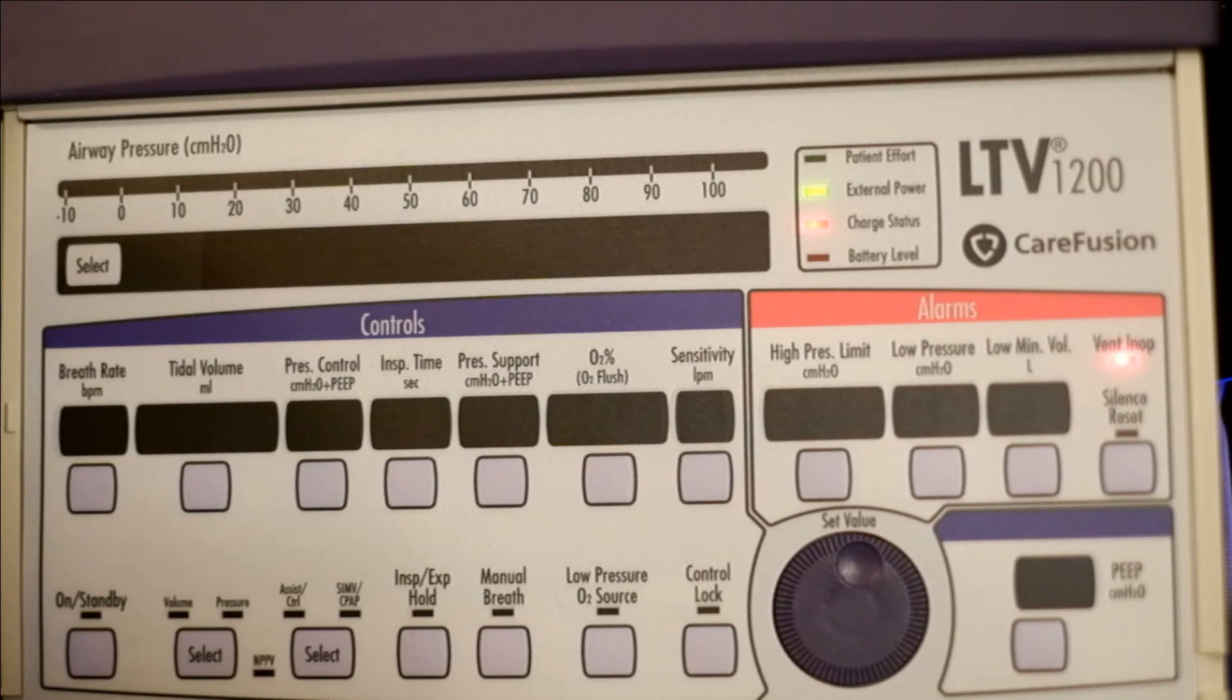Again, if you're increasing the PEEP, check the blood pressure, keep checking the blood pressure. Make sure you review, make sure you watch the videos that are online for the LTV 1200. Most important thing...